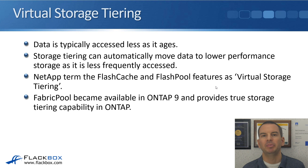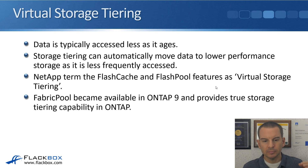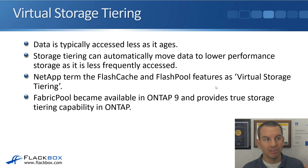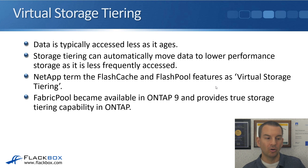Storage tiering automates the process of moving data to the most suitable storage. You could do this manually, but it would be great if the system could automatically analyze the data, see whether it's being used, and when it's not, move it to lower performance storage. Traditional storage tiering would typically mean keeping hot data on SSDs and moving cold data onto spinning disks, either on the same system or a different system.